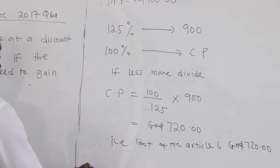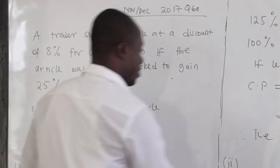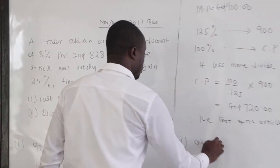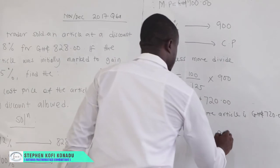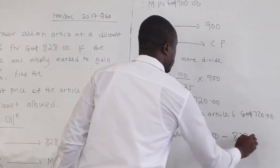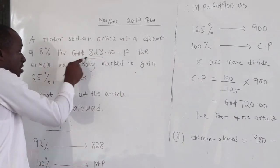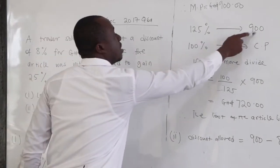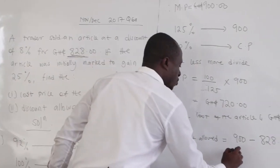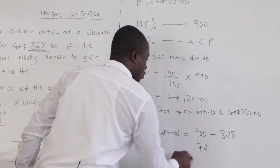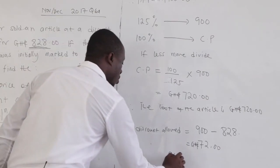The second part asks: find the discount allowed. The discount allowed will be the marked price minus the selling price, that is 900 cedis minus 828. The marked price was 900 and it was sold for 828, so 900 minus 828 gives us 72 cedis.